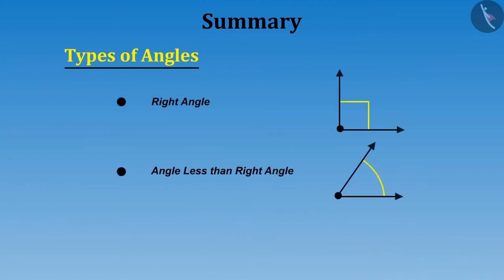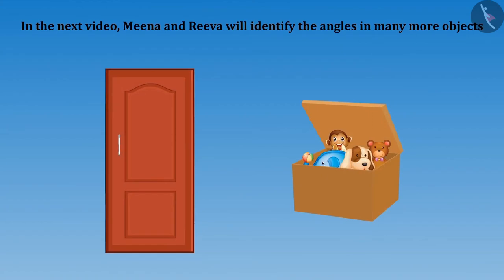Let us go home. In this video, we have learnt about three types of angles: right angle, angle less than right angle and angle greater than right angle. Do you want to identify more angles in other objects? Then you need to watch the next video. In the next video, Meena and Riva will identify the angles in many more objects like doors, toy boxes. So let's meet in the next video. Thank you.